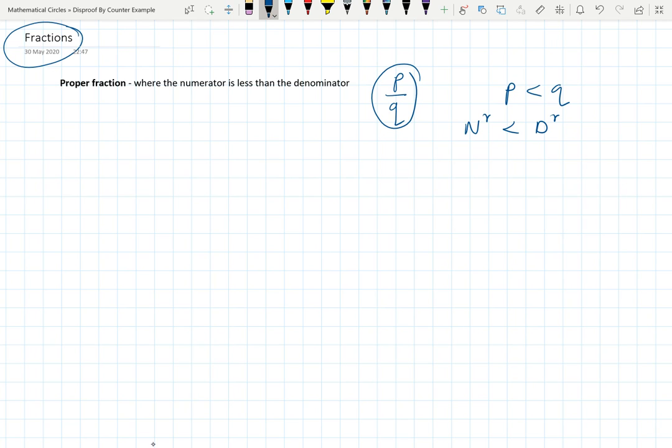Obviously, you can understand the value of this proper fraction is always going to be between 0 and 1 because numerator is less than denominator. Examples include 3/5, 11/16, or 271/272. All these are proper fractions.